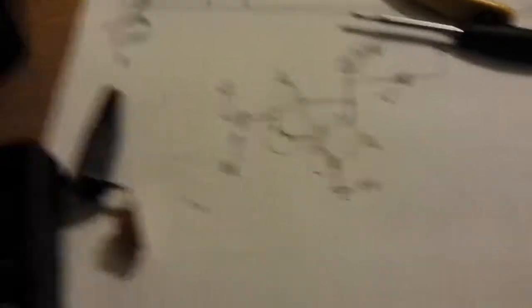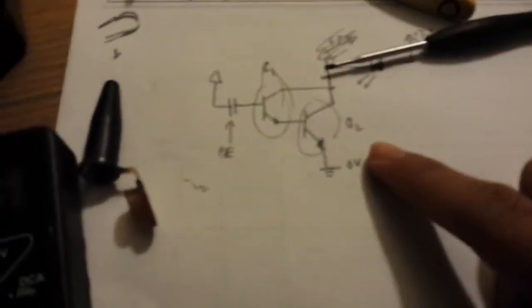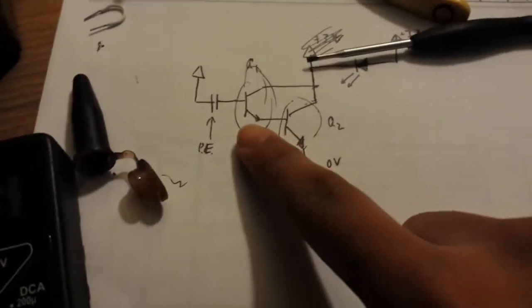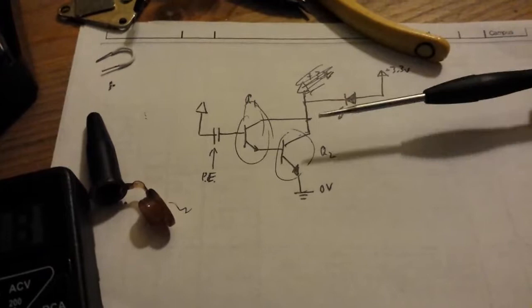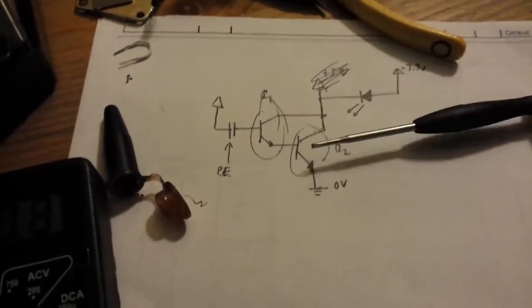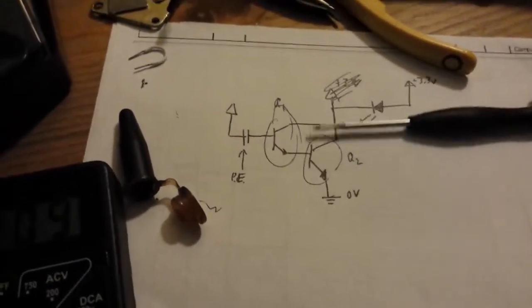For the amplifying circuit, I used a Darlington pair. Basically you have two NPN transistors where the emitter of one goes into the base of another, so the overall result is having a gain of about 1,000 to 2,000.